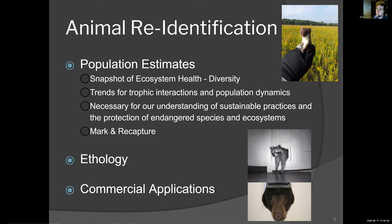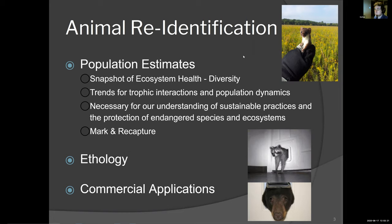It's necessary for our understanding of sustainable practices and protection of endangered species and ecosystems around the world. This is done through a mechanism known as mark and recapture, where we sample from a population, mark or identify the individuals, release them, then re-sample from the same population. Based on the proportion of individuals that have been seen versus unseen, we have an overall estimation of the population size for that area. It's also useful in ethology — animal behavior — for long-term studies, and there are commercial applications in fisheries, as well as something like a dog door detector to make sure it's actually your puppy coming home.